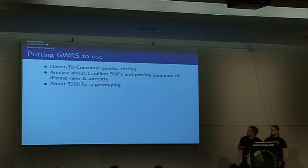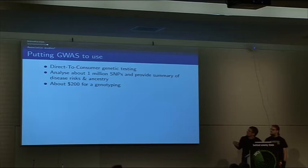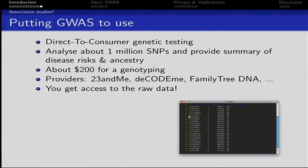Nowadays, GWAS can be used by the private customer through direct-to-consumer genetic testing companies like 23andMe or DecodeMe. They analyze about a million SNPs and provide a summary of disease risks together with ancestry information. And it's just 200 dollars — it's not much. A couple of companies are doing that, and the best thing is that they send you the raw data; they don't lock it up from you.